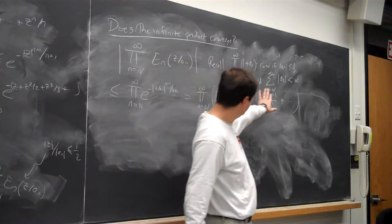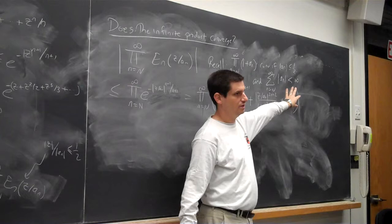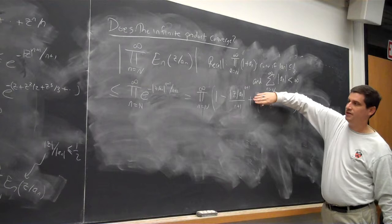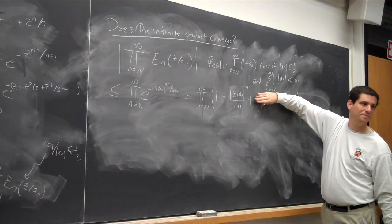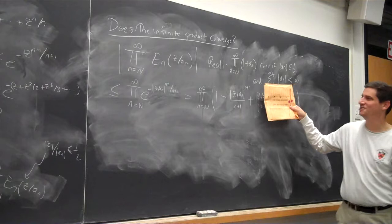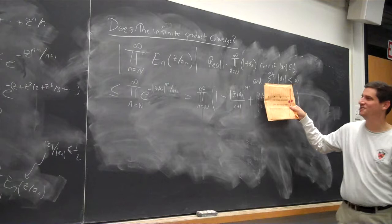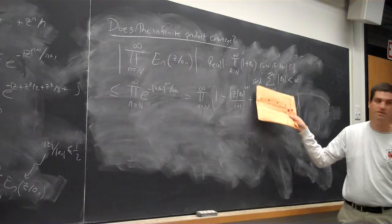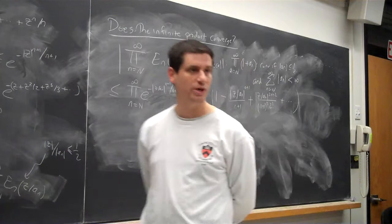If we didn't have any of the extra terms, would the problem be easy? It would be finite inside the product, and we could tell if it converged. Why? Because |z/a_n| ≤ 1/2, so we have a geometric decay plus extra decay. So without the extra terms we'd be fine. The question is: how much damage can everything else cause? Probably not much. We want to estimate the best and worst case scenario.